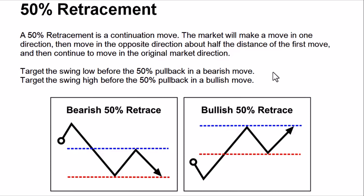Now take a look at this bearish 50% retrace move on the chart. The market came down — this is the first move — then we have a pullback covering 50% of that original move. Let's say this original move is 100 pips down; the market needs to cover at least 50 pips, then continues in its original direction, hitting a support zone. Moving backward forms a resistance right at the 50% threshold of that move — the 50% window in the Fibonacci tool.